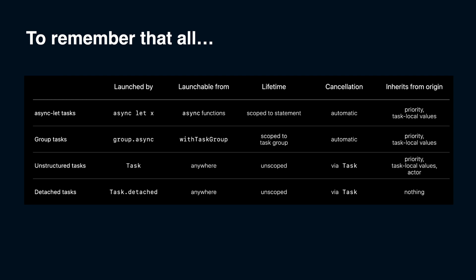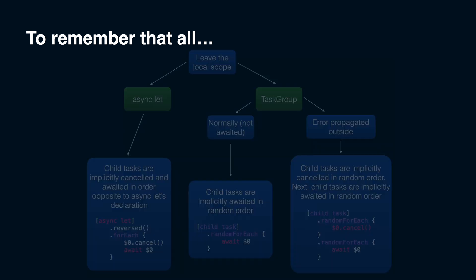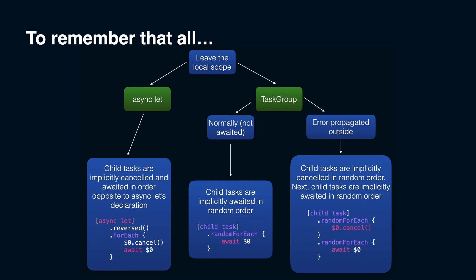For structured tasks' lifecycle when local scope is left, this scheme should be useful as well. If you spot any inaccuracies or misleading points in this video, please share them in the comments — your feedback helps everyone. Good luck on your Swift concurrency journey. See you in the next video.